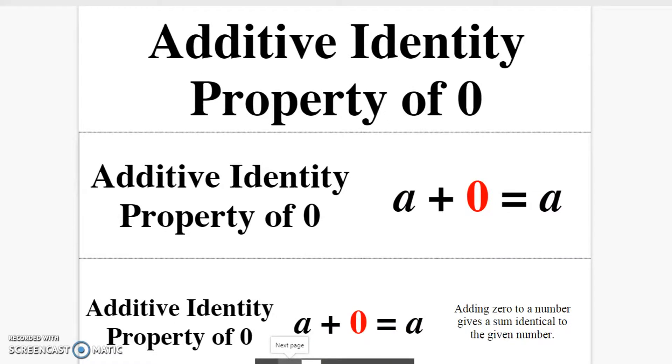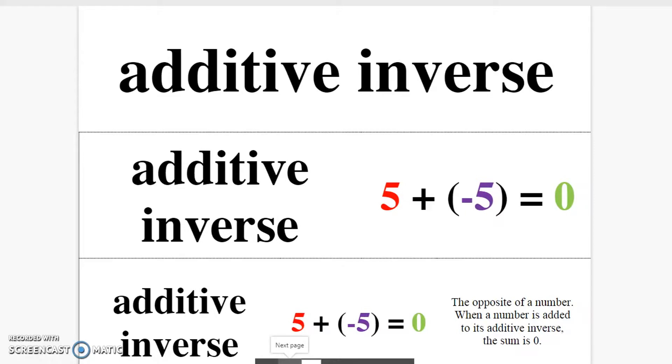Additive identity property of zero. Adding zero to a number gives a sum identical to the given number. Additive inverse. The opposite of a number. When a number is added to its additive inverse, the sum is always zero.